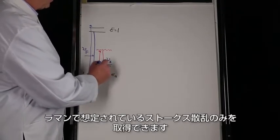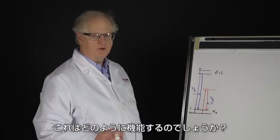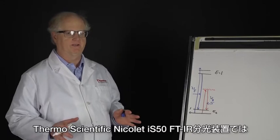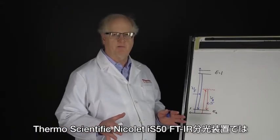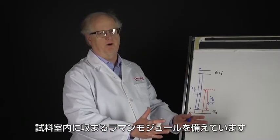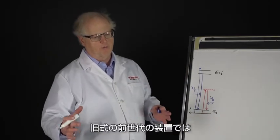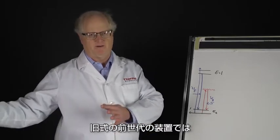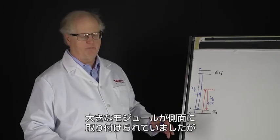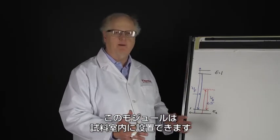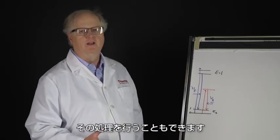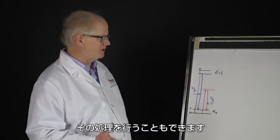On the ThermoScientific Nicolet iS50 FTIR spectrometer, we have a Raman module that fits right into the sample compartment. It doesn't require sitting on the side like previous generation instruments had. This module just fits right in the sample compartment and utilizes the interferometer and detector scheme of the Nicolet iS50 spectrometer.